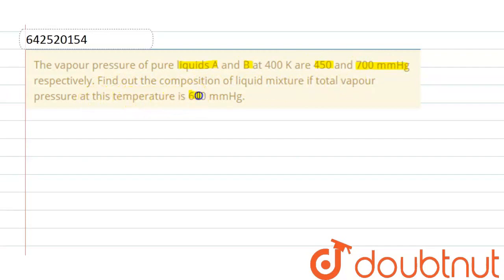This temperature is 600 mm of Hg. So, pressure of pure liquids is 450 and 700 mm of Hg. According to Raoult's law,